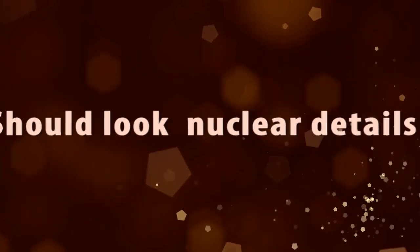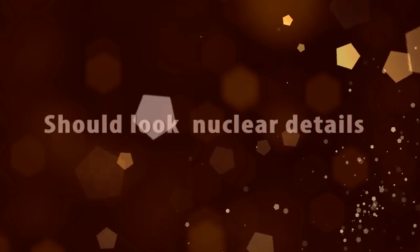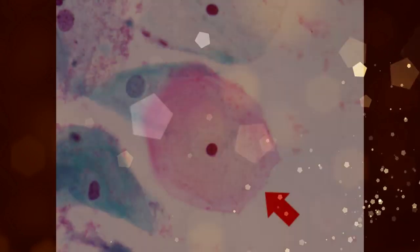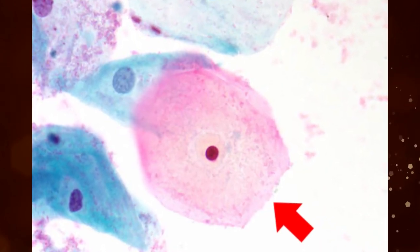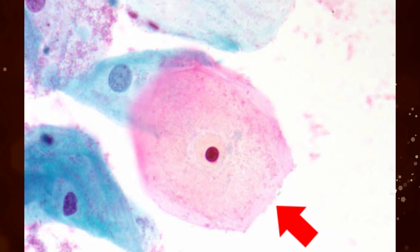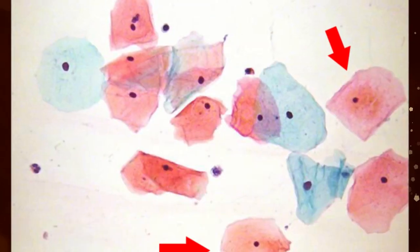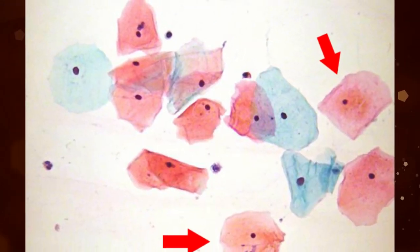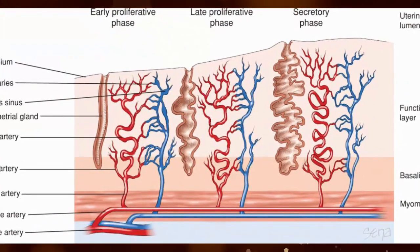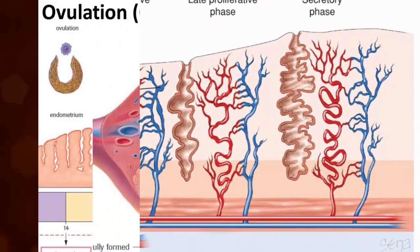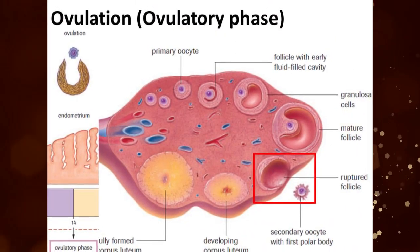We should always look for nuclear details. Superficial squamous cell nuclei are always small, central, and pyknotic. Superficial squamous cells are seen in abundance during the late proliferative and ovulatory phases of the menstrual cycle.